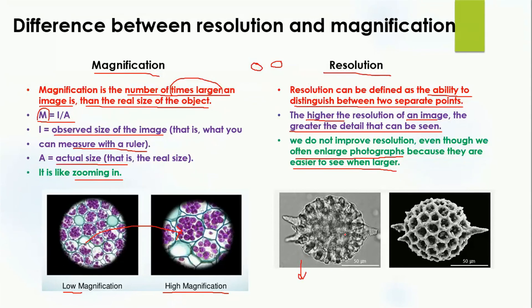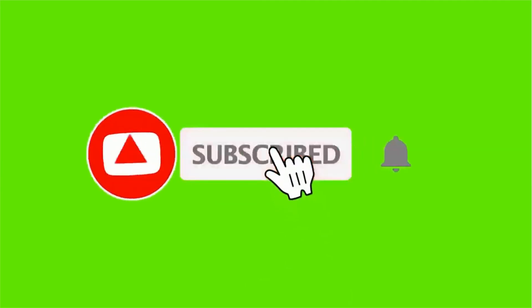This image is very blurred — that is low resolution. But this image has high resolution: you can see that the two points are clearly distinguished compared to the blurred image. This is how resolution works and how magnification works. I hope this concept is now clear.